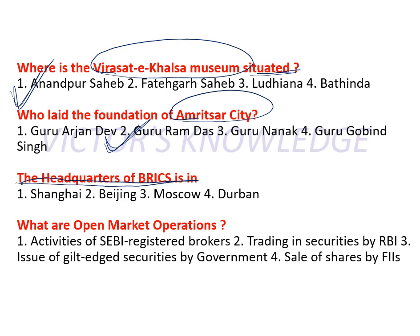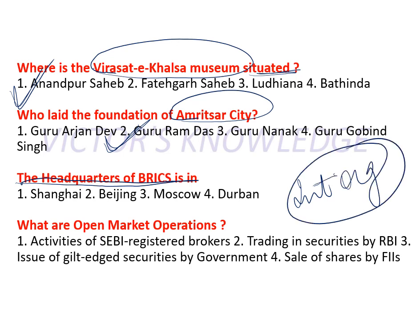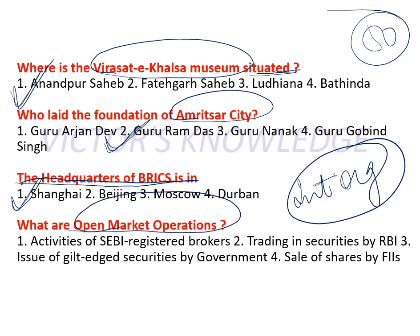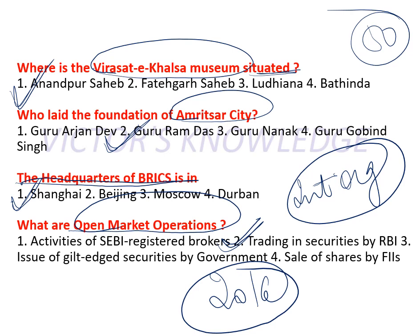Next question on international organizations: I have covered around 50 international organizations with their headquarters in two-part videos. BRICS headquarters is in Shanghai. Next: Open Market Operation — I discussed this today in the Money and Banking chapter under Economy. Open Market Operation means trading in securities by the RBI — you will find this as the first point in the last slide of that video. These were all the important questions from the 2016 Sub Inspector exam. If you like this video, please share it, subscribe to my channel. Thank you and good luck.